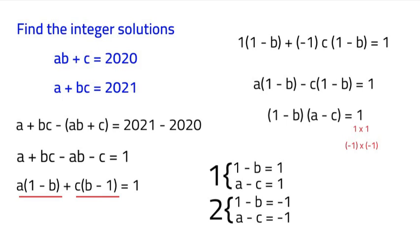So the first one, 1 minus B is equal to 1. That would be 0. So B is equal to 0. Now, if we go to our original equation in the top left, we have AB plus C is equal to 2020. So in order for that to equal 2020, if we were to plug in 0, that means C would have to equal 2020.